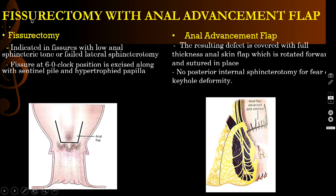There is another procedure called fissurectomy with anal advancement flap. This is indicated in fissures with low anal sphincter tone or a case of failed lateral internal sphincterotomy. The fissure at the 6 o'clock position is excised along with the sentinel pile and the hypertrophic papillae. Then you have to do the anal advancement flap — the resulting defect is covered with a full-thickness anal skin flap which is rotated forward and sutured in place. You should not do any posterior internal sphincterotomy for fear of keyhole deformity.